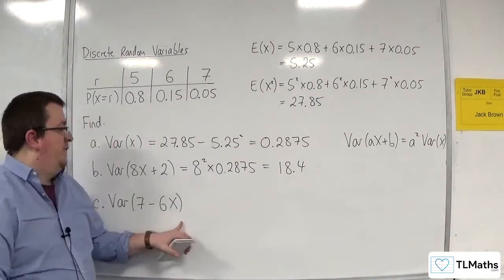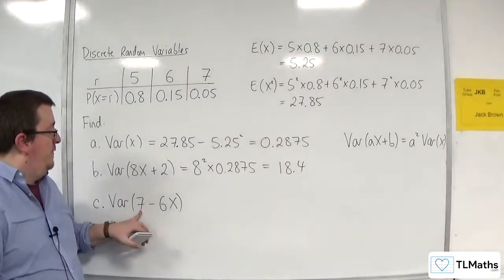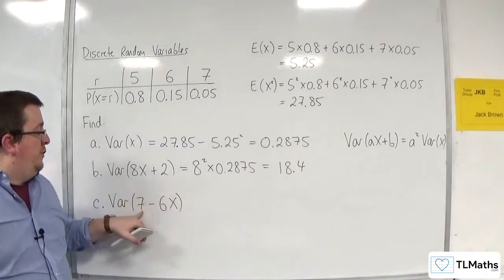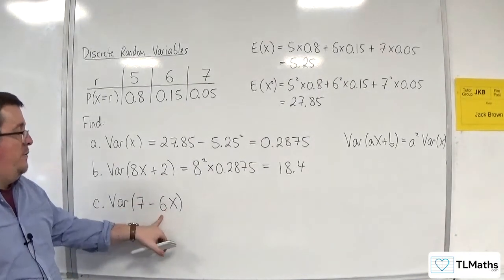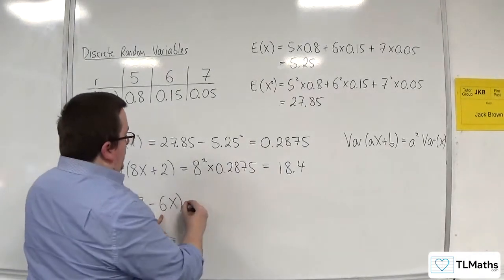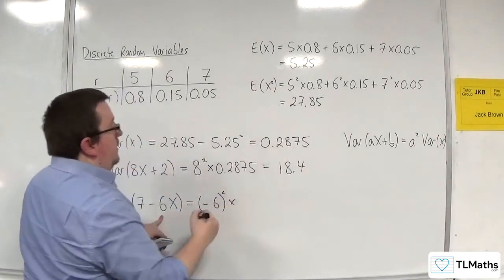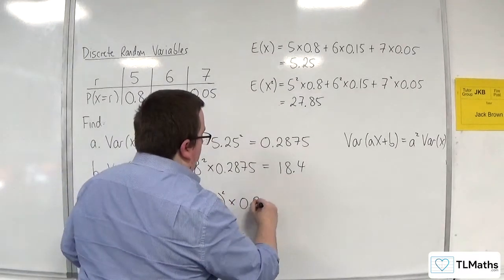Now for var of 7 take away 6x, we've got this plus 7 in there, so just like the plus 2, we can ignore that. That's gone. Now the coefficient of x here is minus 6, so we're going to have minus 6 squared times the 0.2875.